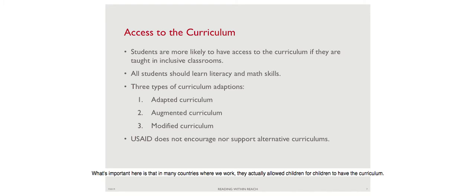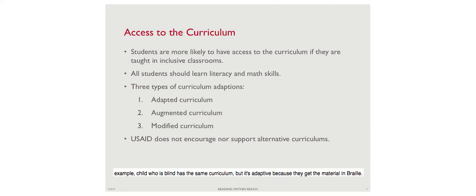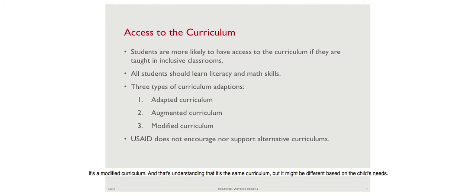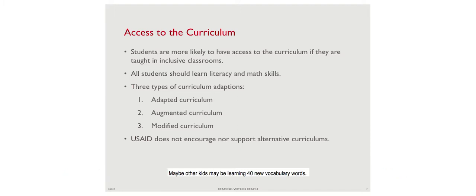Regarding access to curriculum - there are three types discussed in the toolkit. First is an adapted curriculum, where a blind child has the same curriculum but materials are in Braille. Second is an augmented curriculum - the same curriculum but with additional support, for example deaf children may also get deaf culture as an additional course, or blind students may get mobility and orientation. Third is a modified curriculum - same curriculum but adjusted for the child's needs, such as learning fewer vocabulary words.